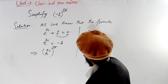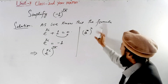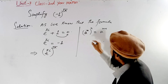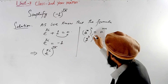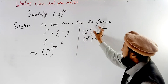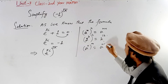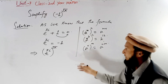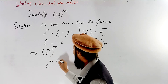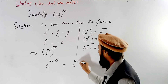According to the double exponent rule: a to the power m, all raised to the power n, equals a to the power m times n — both exponents are multiplied. For example, 2 to the power 3 raised to the power 4 equals 2 to the power 12. Applying this rule here, we get e to the power of i times pi times square root of pi.